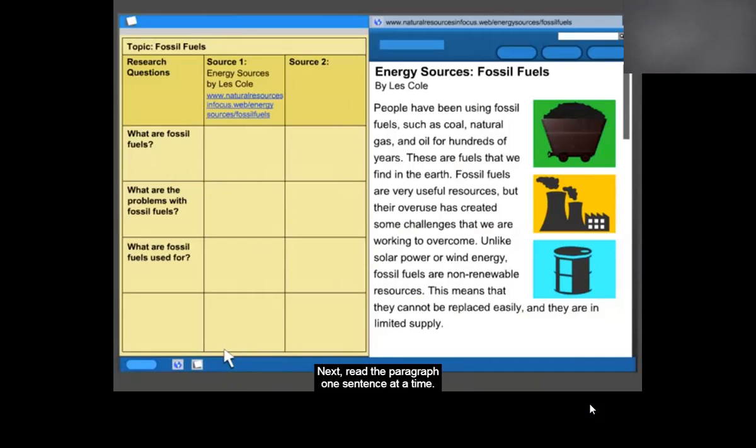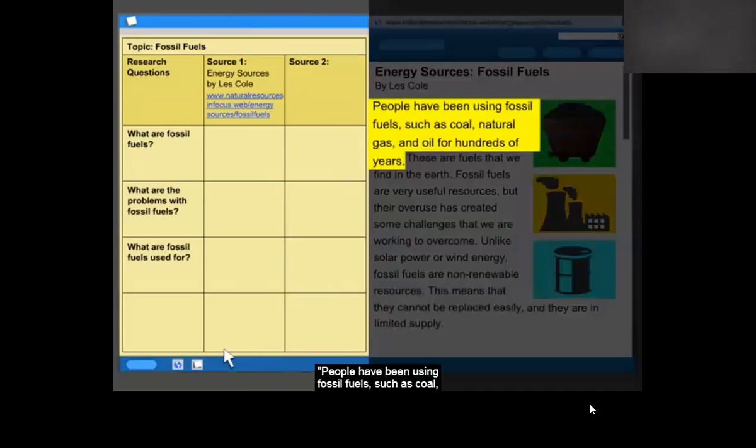Next, read the paragraph one sentence at a time. Watch how I take notes on my source. People have been using fossil fuels, such as coal, natural gas, and oil, for hundreds of years.